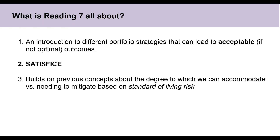We've talked a lot in reading six about how the key to whether we can accommodate an individual's quirks or whether we have to educate them out of it depends on the type of bias they're facing and their standard of living risk. One important note: the examples in the curriculum reading aren't necessarily great examples of how this material gets tested. You should actually skim a few IPS questions in the morning mock exams — that'll give you a better sense of how these concepts get tested in the constructed response section and what type of information is typically given in a passage to determine an individual's risk tolerance.